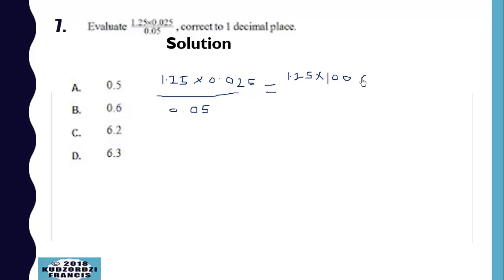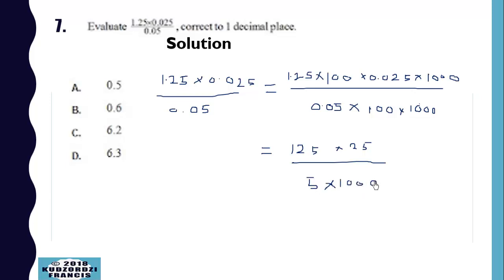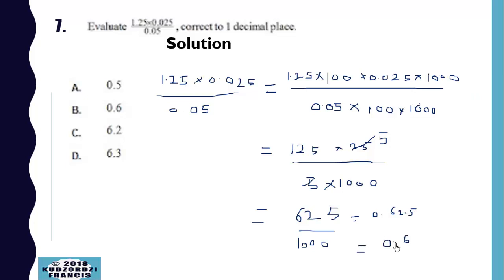I multiply 1.25 by 100 to give 125, and 0.025 by 1000 to give 25. Because I multiplied the top by 100 and by 1000, I need to multiply the denominator also by the same values. So we have 0.05 times 100 times 1000. This gives us 125 times 25 over 5 times 1000. Since 5 goes into 25 five times, this gives 625 over 1000, which is 0.625. Correct to one decimal place, that is 0.6.